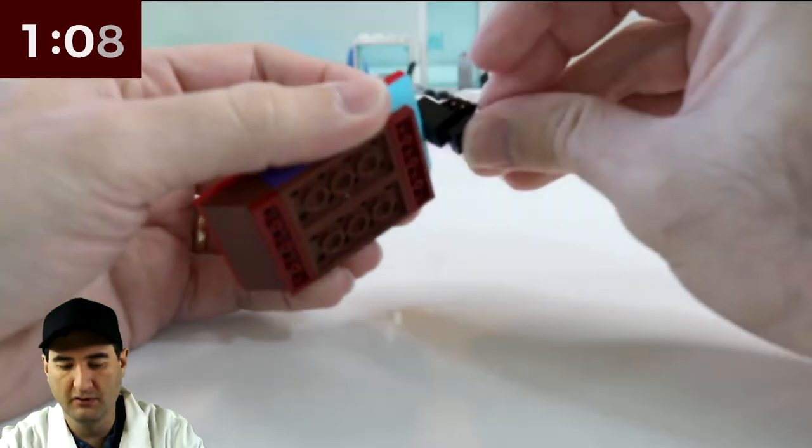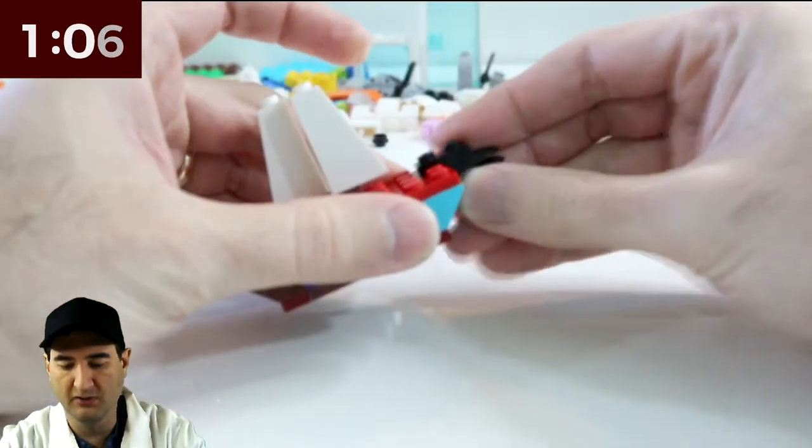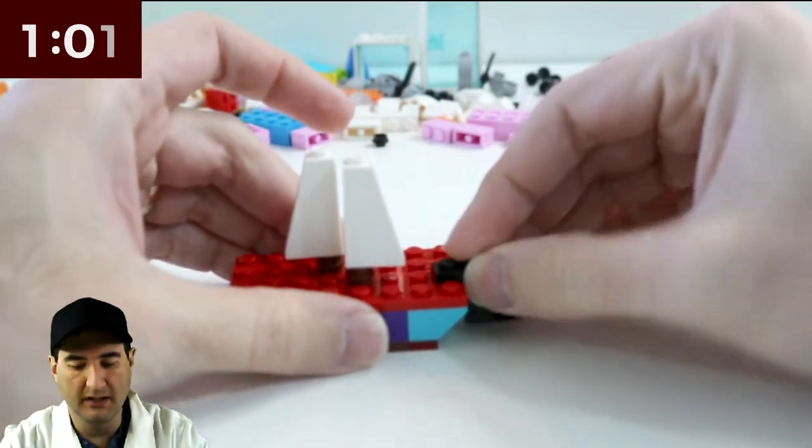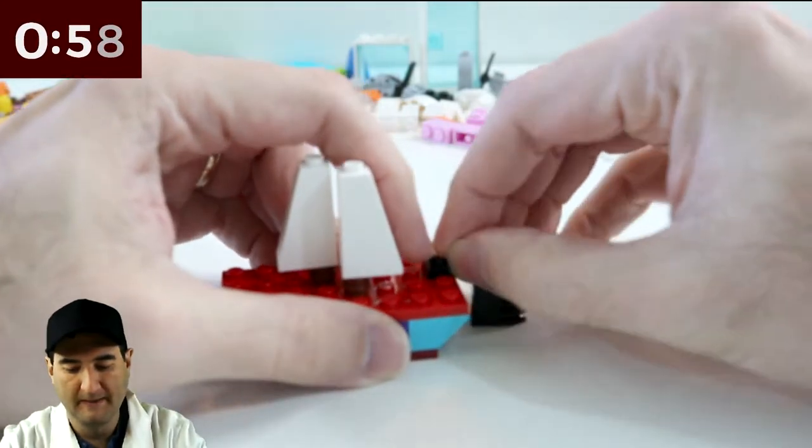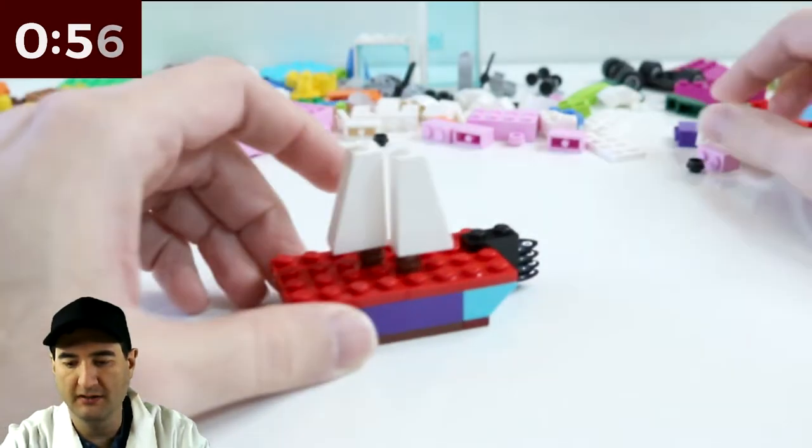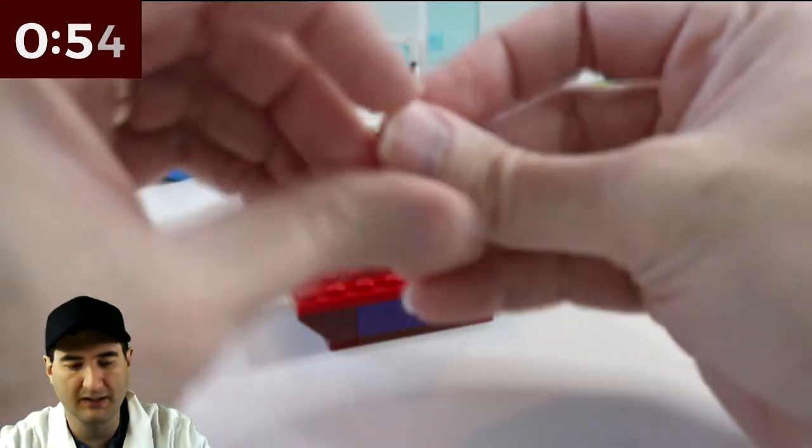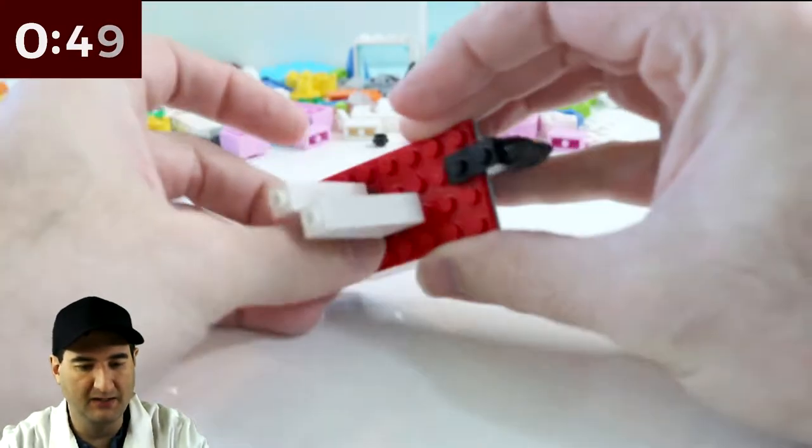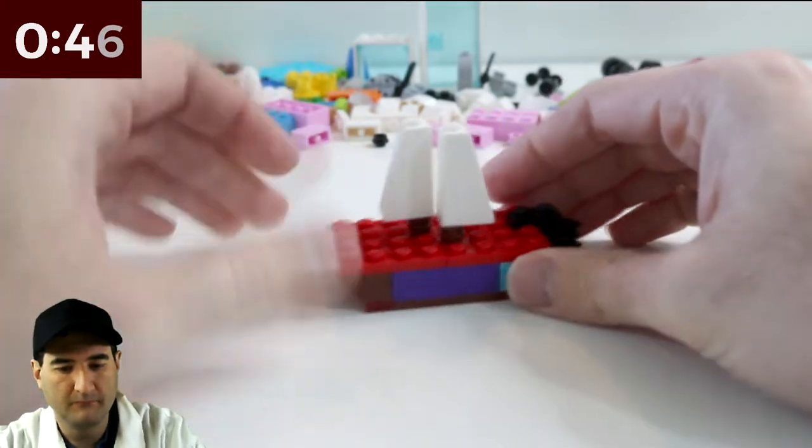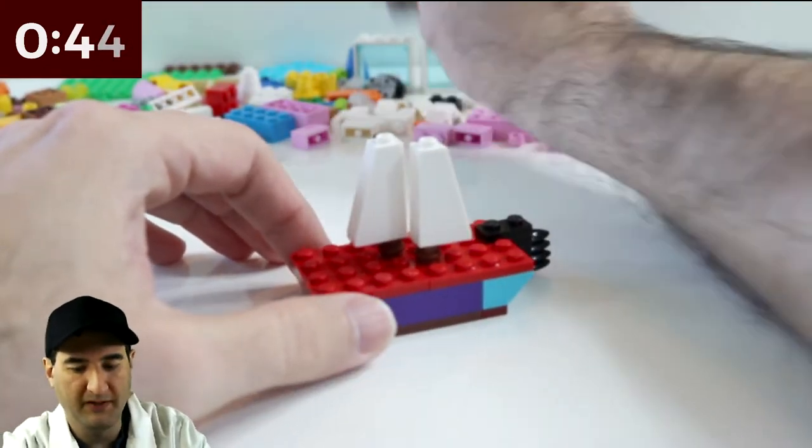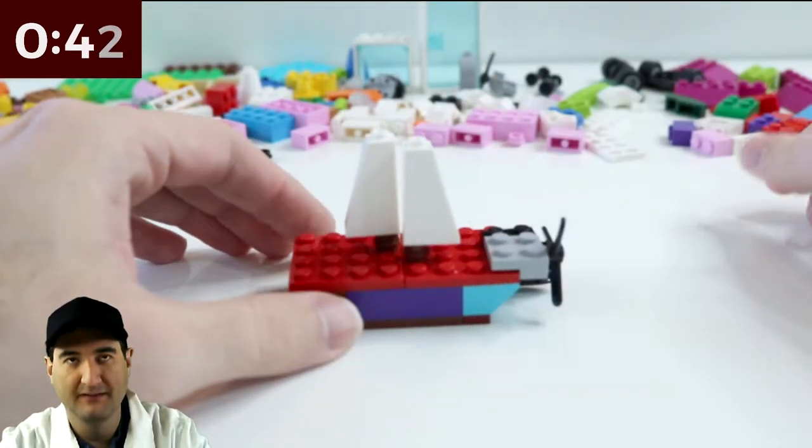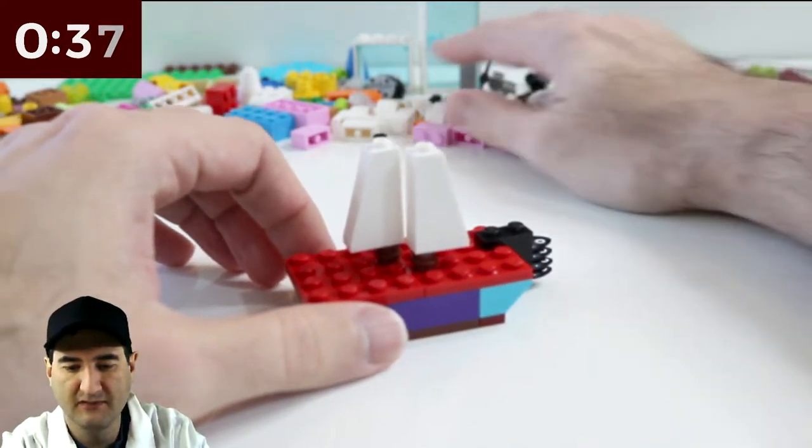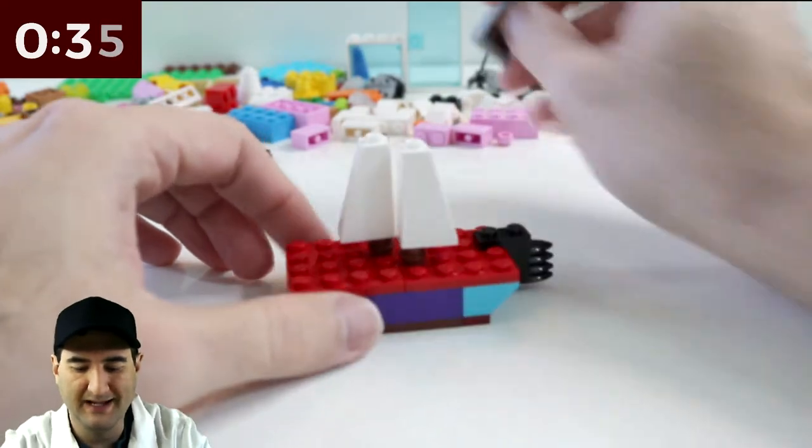We have our rudder on the back. We got ourselves the sails up. What other things can we put on the sailboat to make it look more like a sailboat? I don't know, these dots don't add a lot of value. Could put a propeller on back. That'd be a little silly. We got 20 seconds left. What can we do to add to the sailboat?